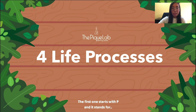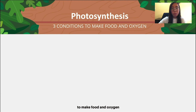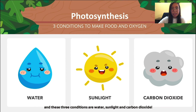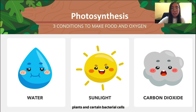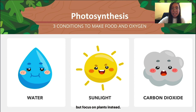Let me give you a clue. The first one starts with P and it stands for photosynthesis. Photosynthesis is a process that requires three conditions to make food and oxygen. These three conditions are water, sunlight, and carbon dioxide. With all three conditions, plants and certain bacterial cells will be able to photosynthesize to make food and oxygen. Since bacterial cells are not covered in our syllabus, we will focus on plants instead.